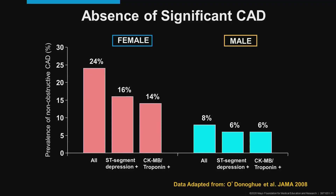We have to remember that not everybody who comes in with a myocardial infarction — symptoms with EKG changes or abnormal blood tests — has obstructive disease. Interestingly, women have more of this non-obstructive disease. A study showed that if you go to angiography and you're female versus male, whether you have STT changes or positive troponins, you have a higher likelihood of having insignificant coronary disease or non-obstructive disease. So this entity is a bit more common in females.